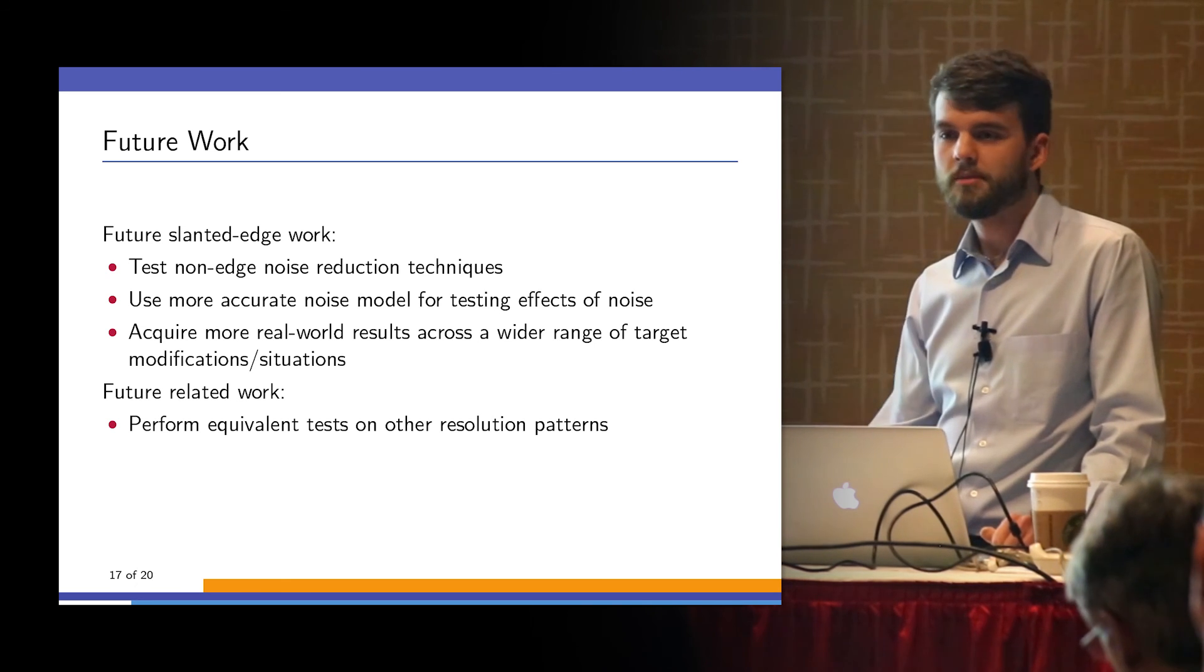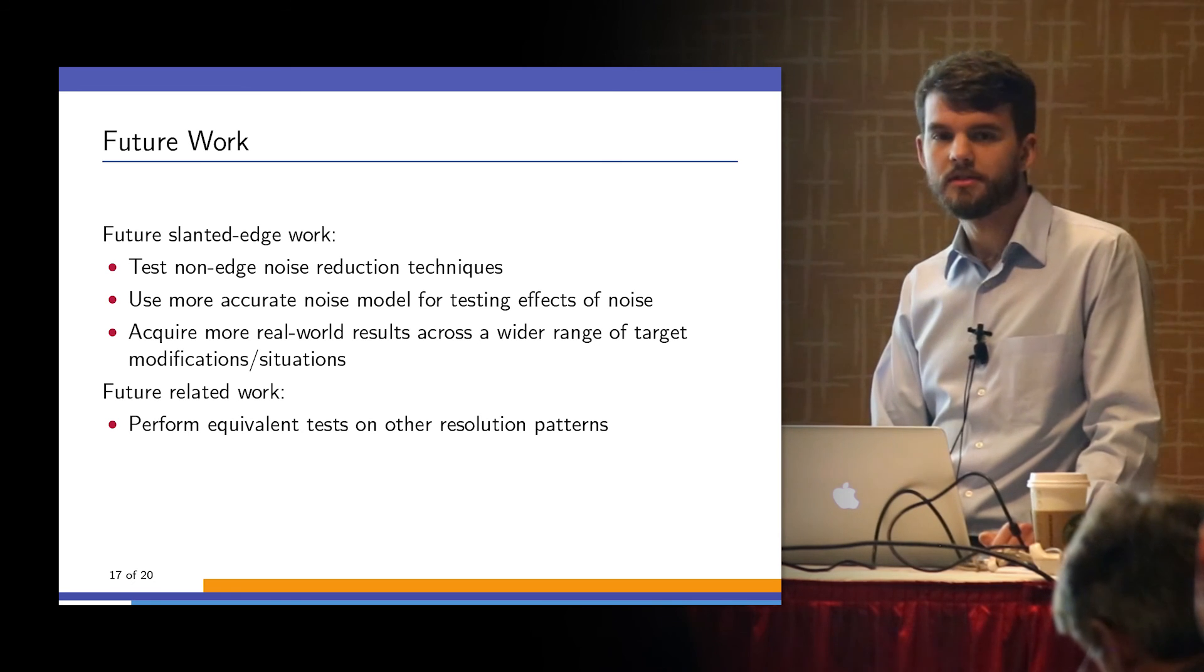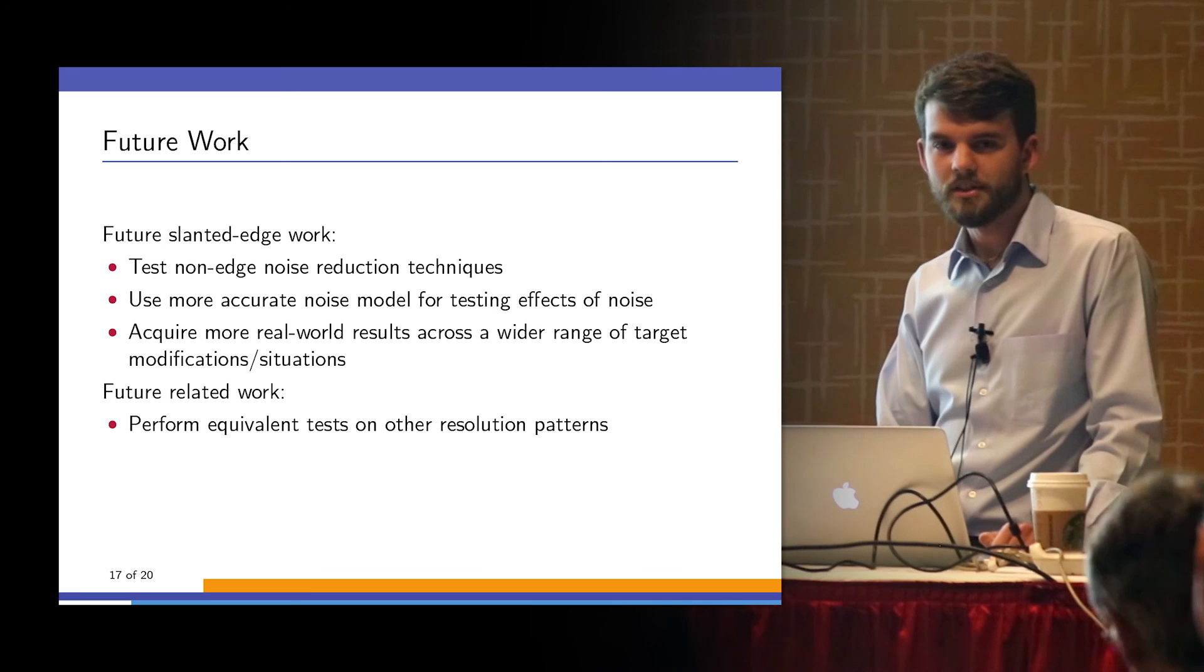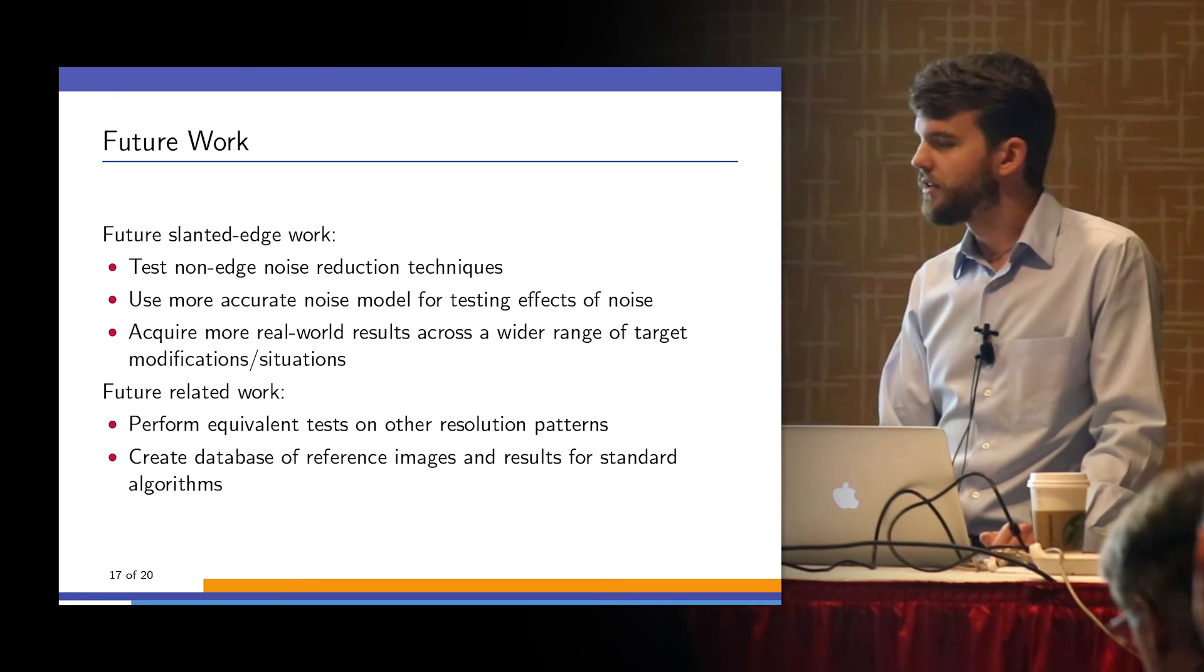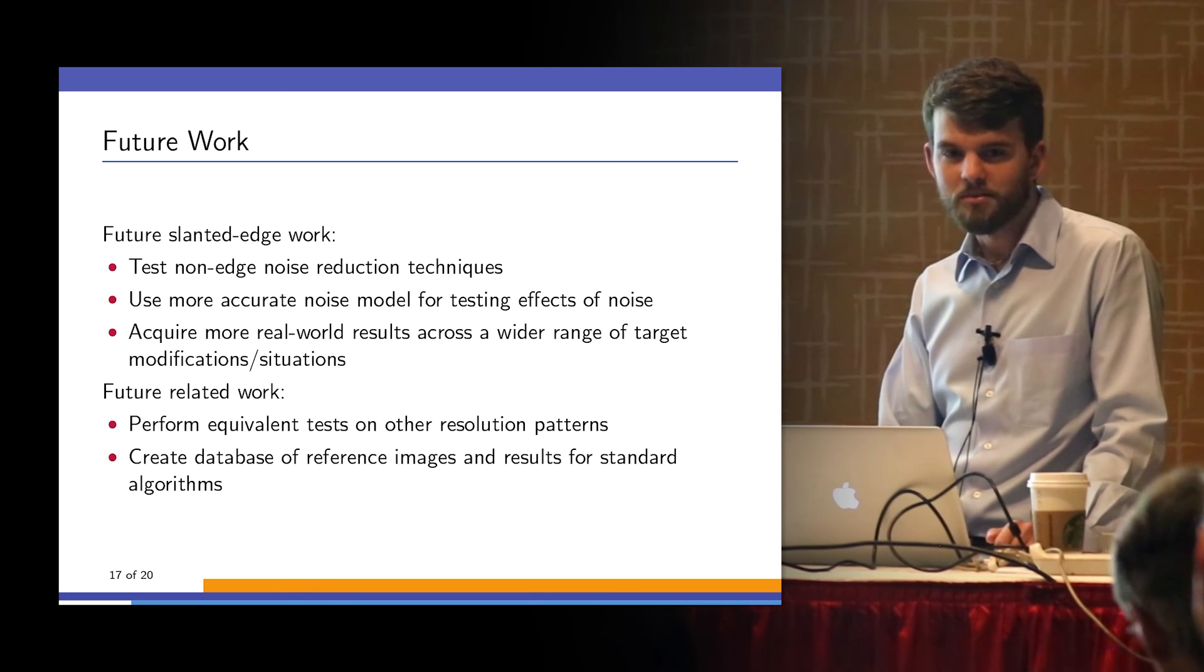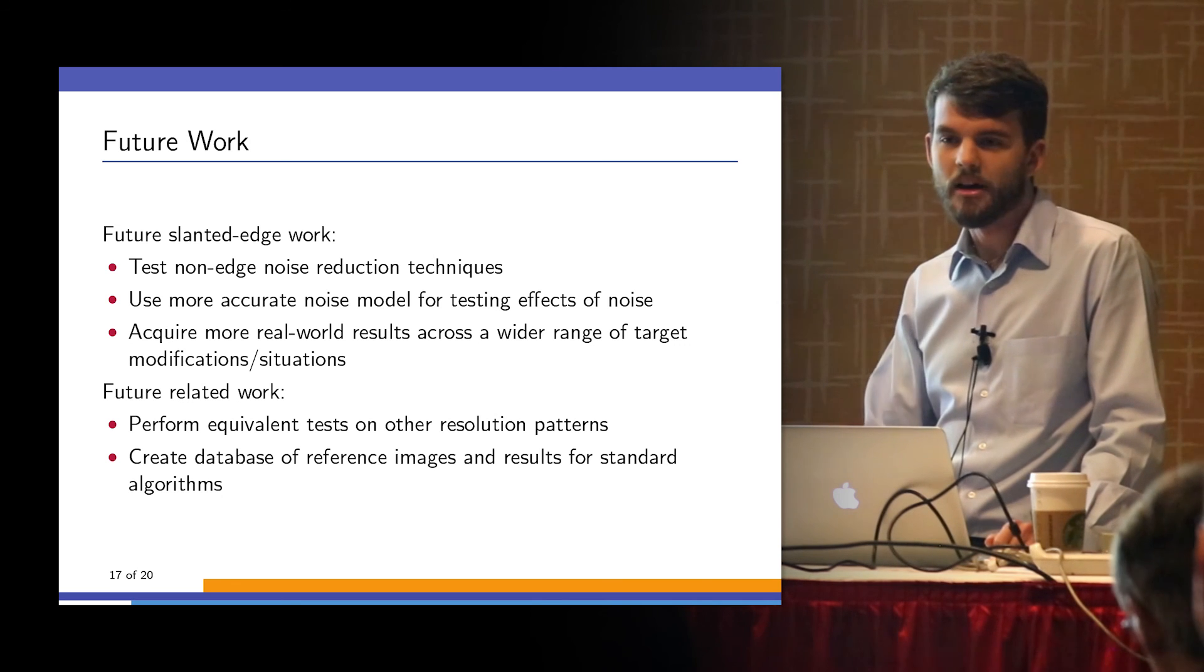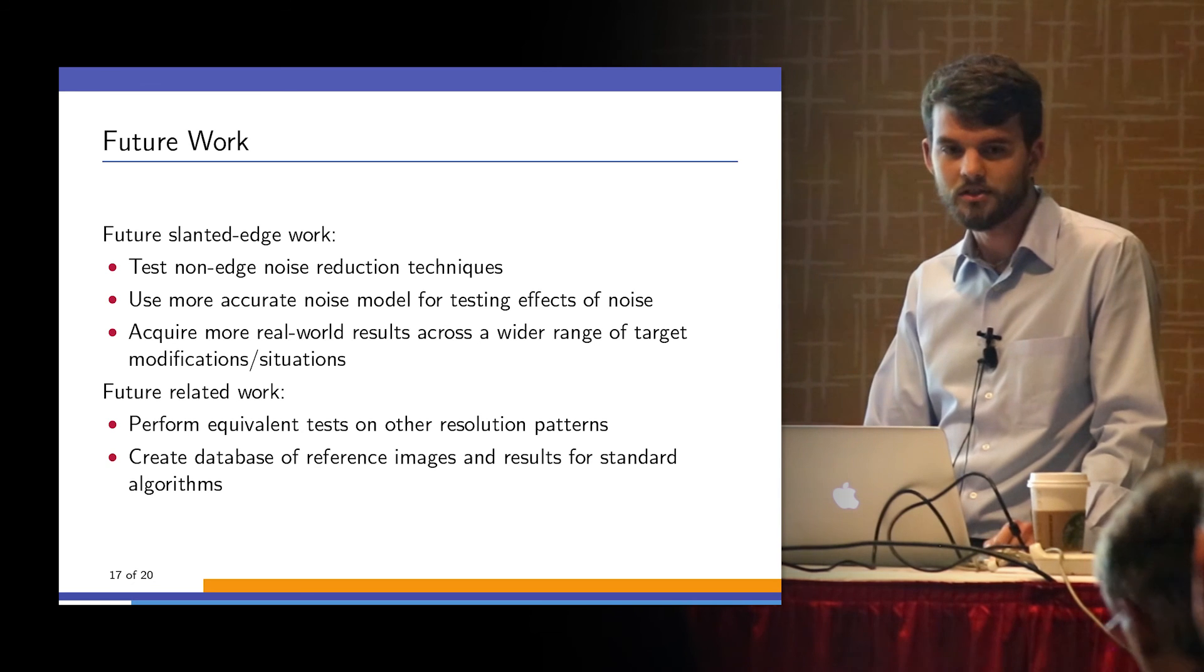Some other work there. It'd be nice to perform similar types of tests on the other algorithms that are out there, particularly ones that are standardized. These algorithms are not perfect and they need some additional coverage. And finally, a long-term goal of mine is to work on creating a database of reference images based on these standard algorithms so that people who are developing new algorithms and modifications have somewhere to go back to and say, am I changing the actual results or am I just improving the statistical variation that's occurring?